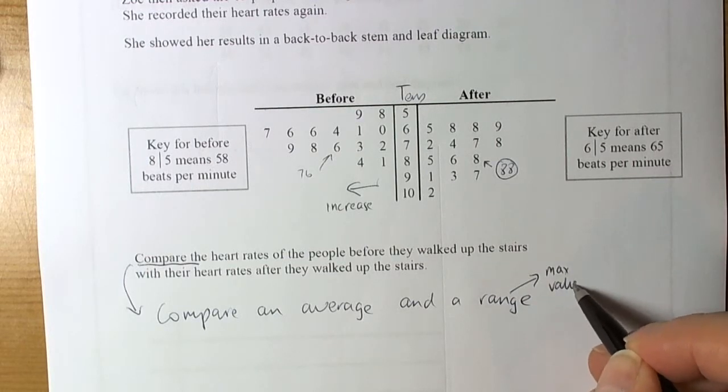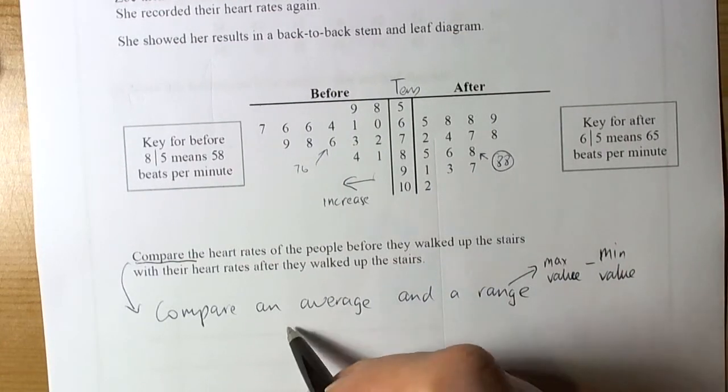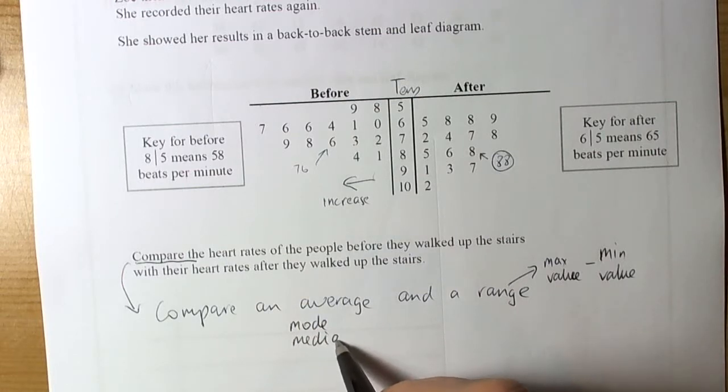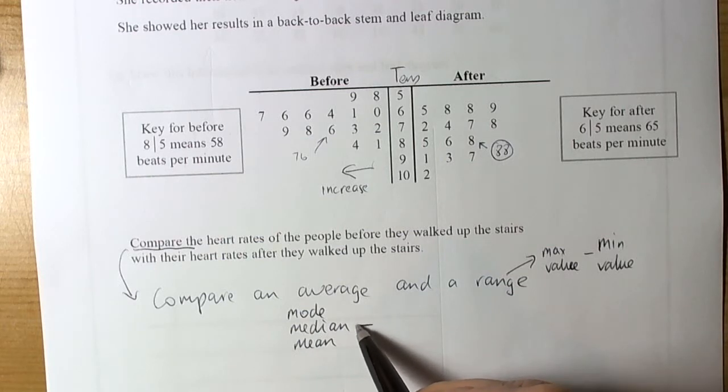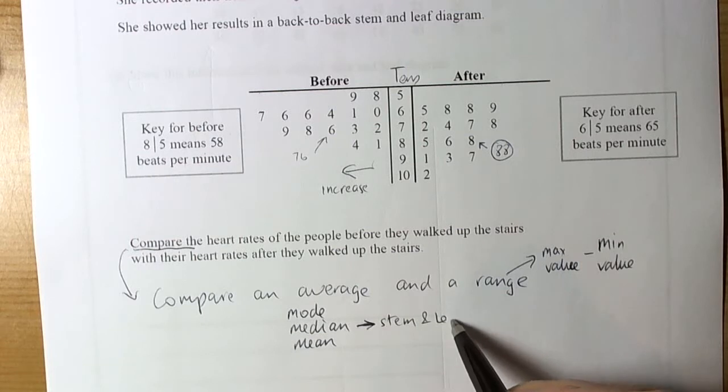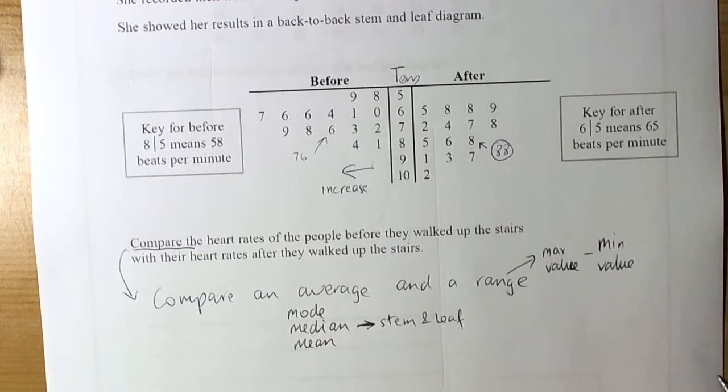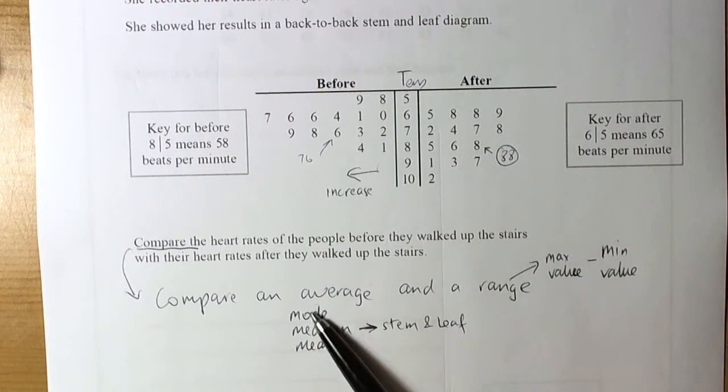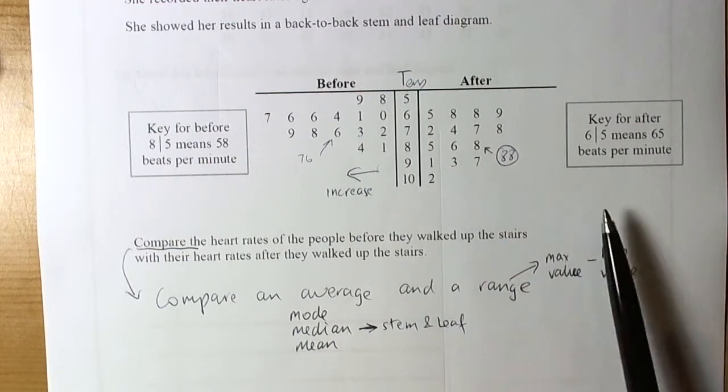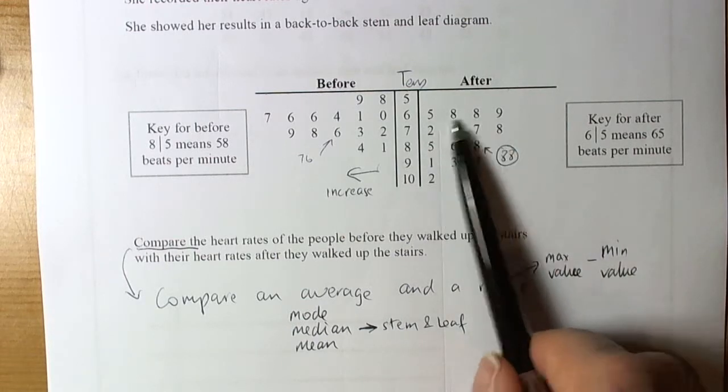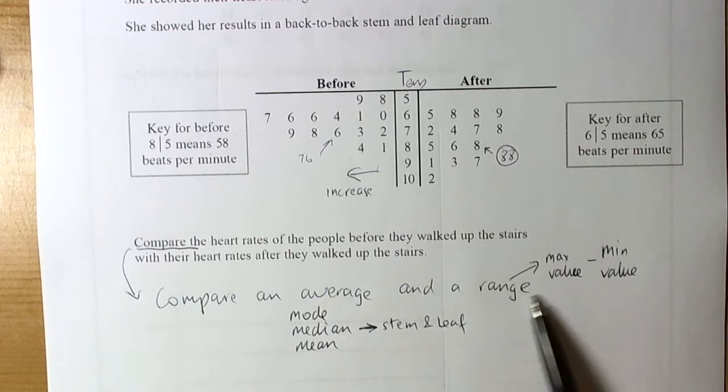So for a stem and leaf diagram, the ordinary range would be fine. So that's your maximum value minus your minimum value. And the average that we could use, well we've got a choice of the mode average, the median average, or the mean average. Now for a stem and leaf diagram, then the median average is the classic one to calculate. So we'll do that. We could calculate the mean, we could have added up every one. That takes a little bit of time, so it's really up to you which one you want to go for. But the median is a classic one for stem and leaf diagrams, and the range is a classic one for these as well.